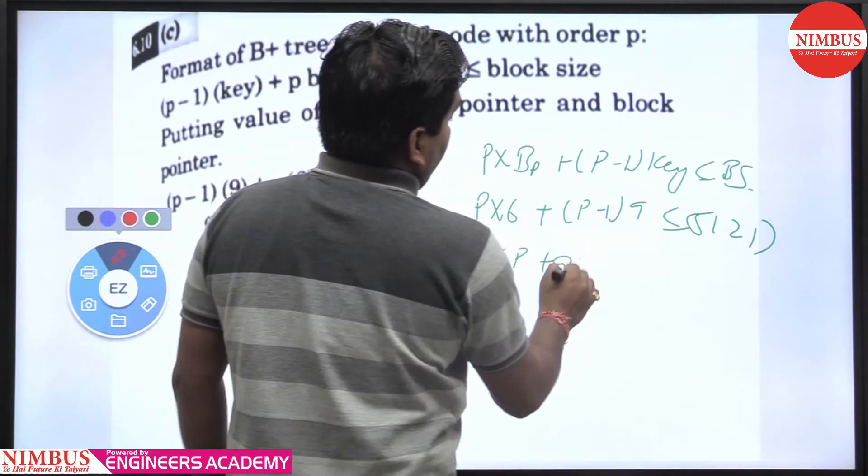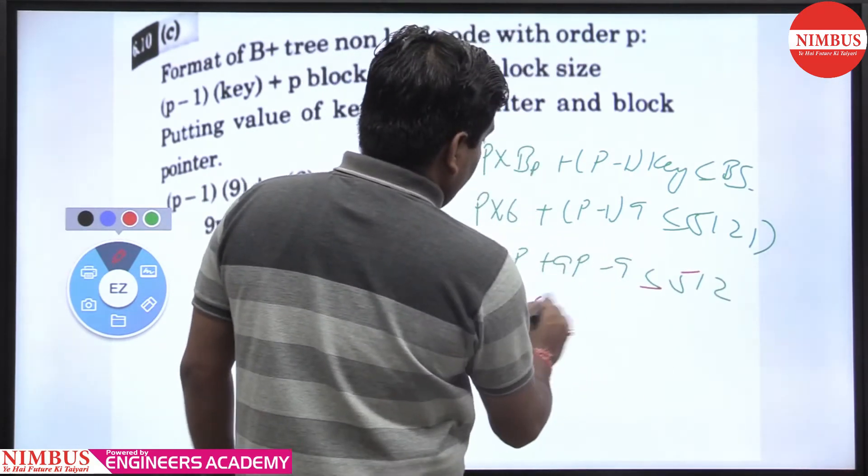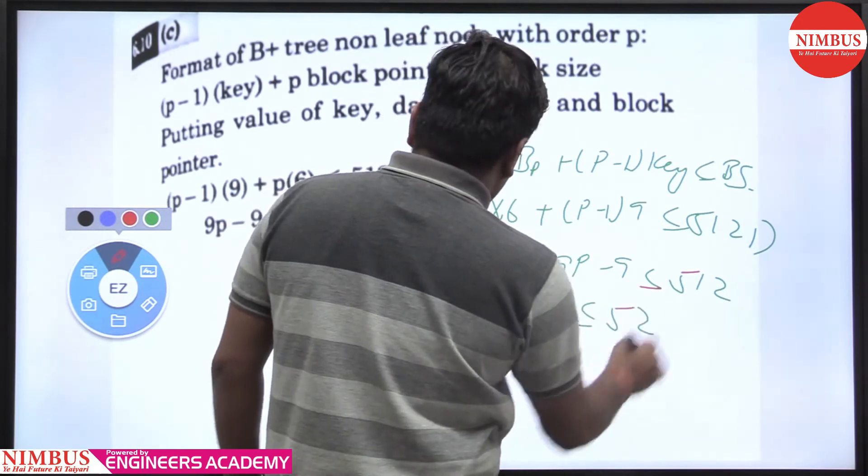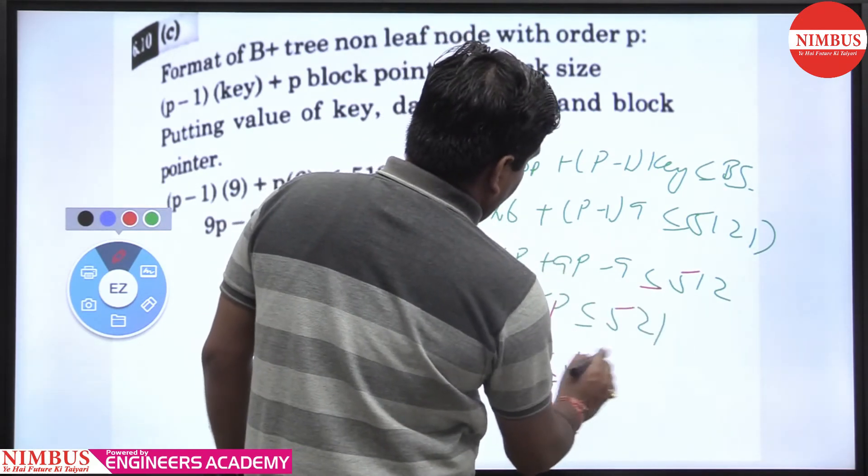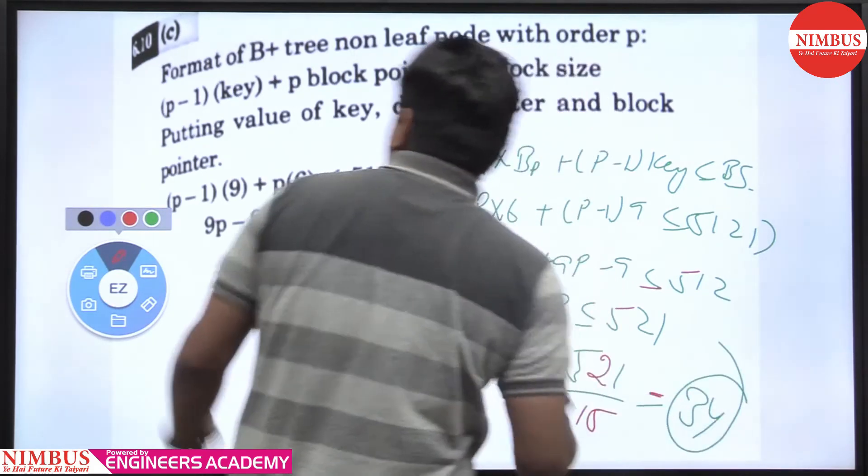So, 6P plus 9P minus 9 less than equal to 512. So, 15P less than equal to 521, then P less than equal to 521 divided by 15, we are getting 34, clear here.